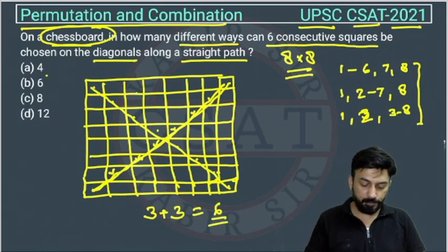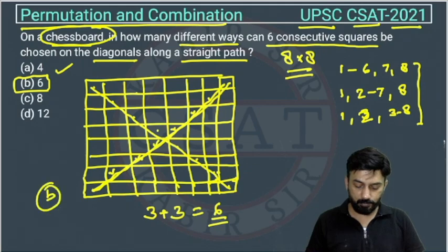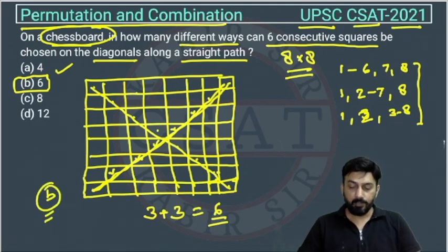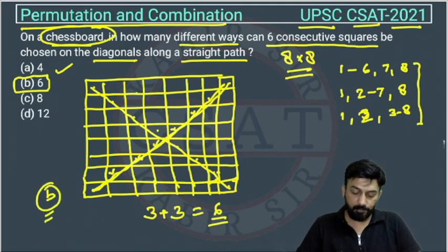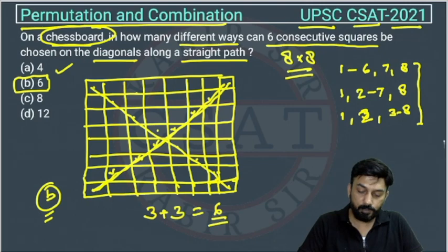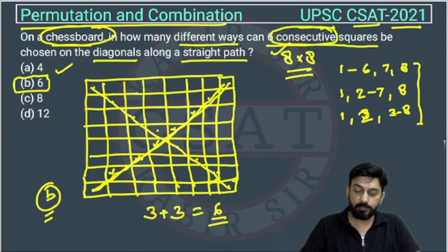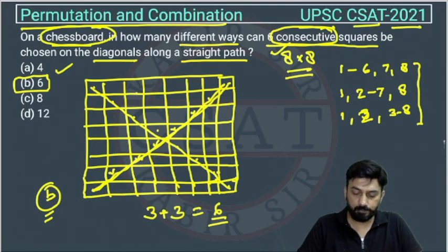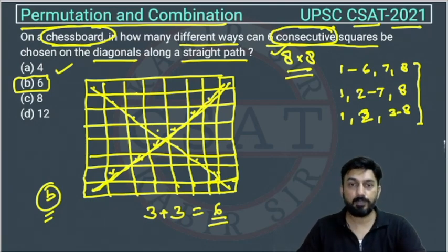So the answer of this question is option B. Right, so see, it is the main concern here. We should know we are choosing squares consecutively. This is very important. Consecutive squares we have to consider. Right, so there is no other possibility. So the answer is option B.